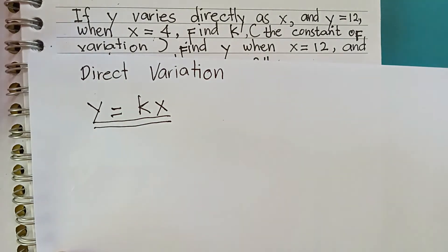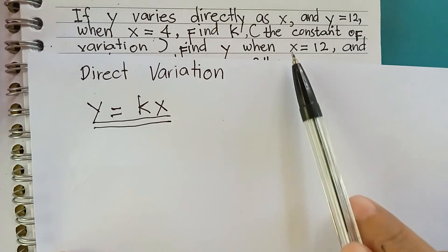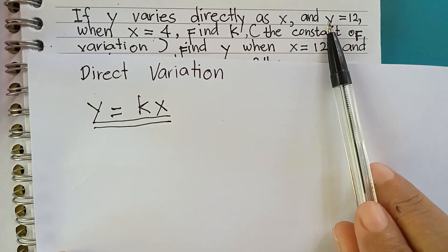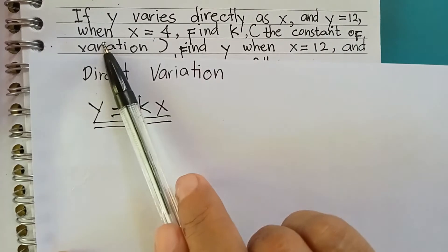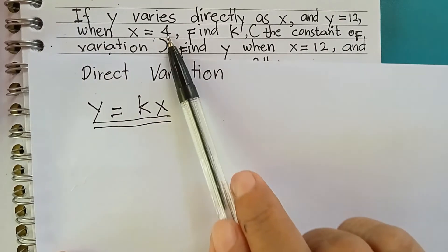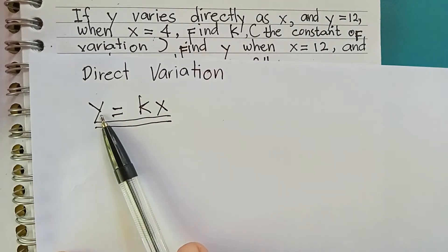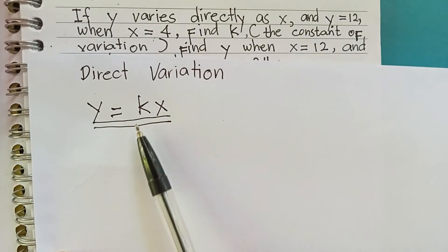So, ano yung atong formula ka ron? Balik tayo diri ah, sa value aning y, which is 12 of x, which is 4. Ato ni silang i-substitute diri ah. Aaron, makita na ito si k.